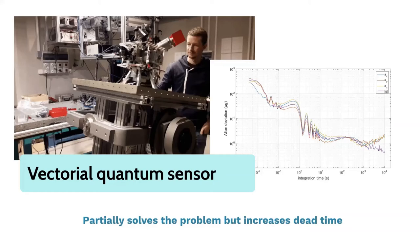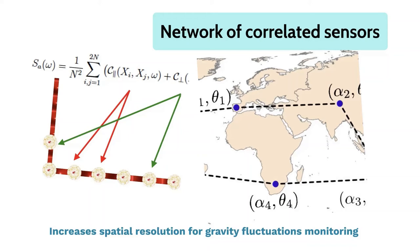We can already build vectorial quantum sensors by interrogating sequentially the atoms in three axes, but it only partially solves the problem because it increases the dead time.